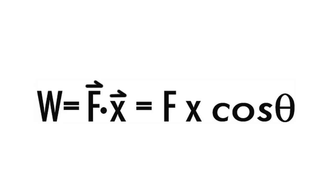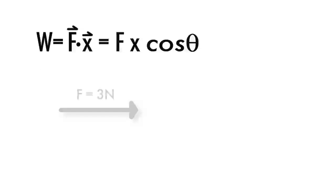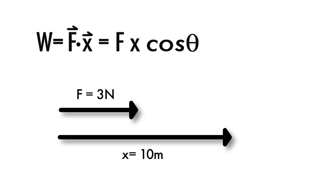We can see this in practice if we take a force of 3 newtons that pulls a box, let's say 10 meters. The force acts parallel to the displacement, so the angle between these two vectors is 0 degrees, and since the cosine of 0 is 1, the work is simply 3 times 10, or 30 joules.